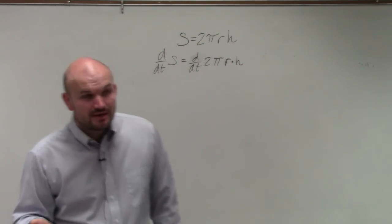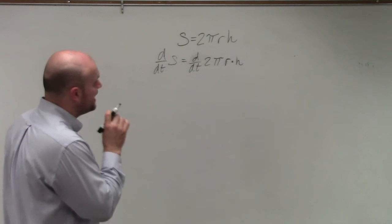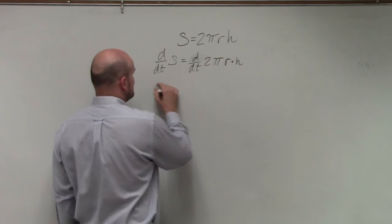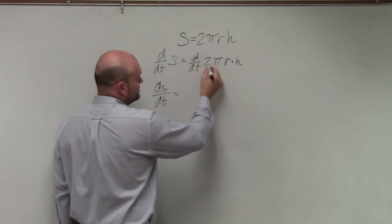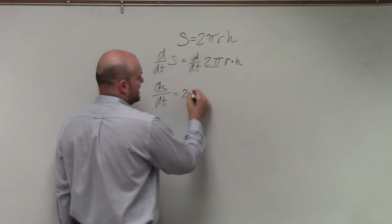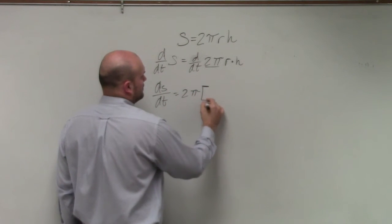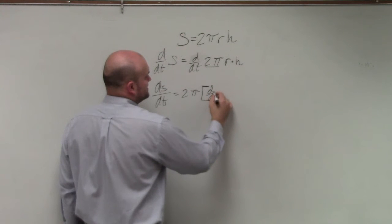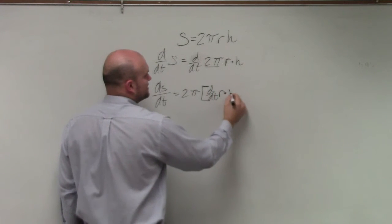Please remember that the r and the h are only two variables. So I have ds over dt equals, that's my constant, so I can take that out. And then I'm just doing d over dt of r times h.